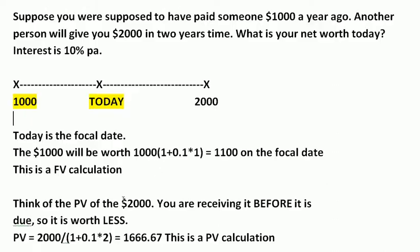So for this calculation, the thousand dollars will be worth P × (1 + rt) — that is, one thousand times (1 + 0.1), because it's ten percent for one year. So the dated value of the thousand dollars on the focal date is one thousand one hundred. The person who lent you a thousand dollars is going to want his thousand dollars back plus interest — that's why it's greater than a thousand, and that's why it's a future value calculation.